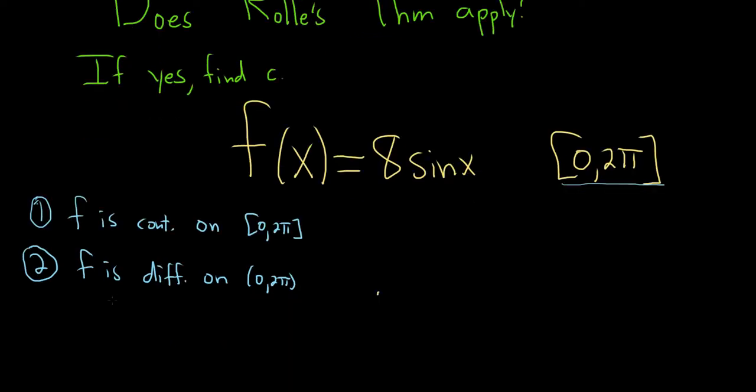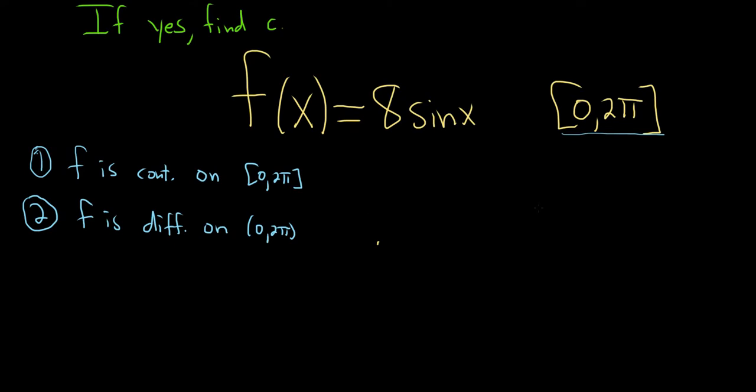The third condition is going to require a bit more work. We have to make sure that the values at the endpoints are the same. So we have to plug in 0 into our function and see what we get. That'll be 8 times the sine of 0, and the sine of 0 is 0, so you just get 8 times 0, which is 0.